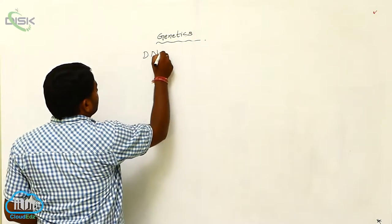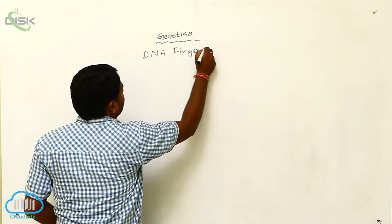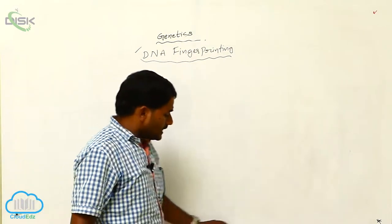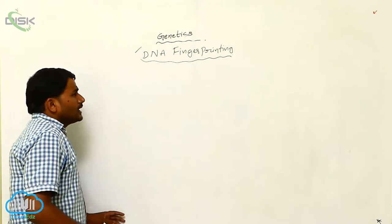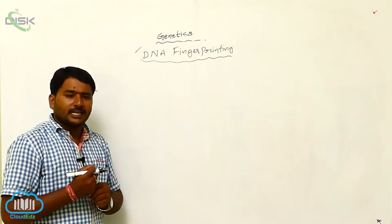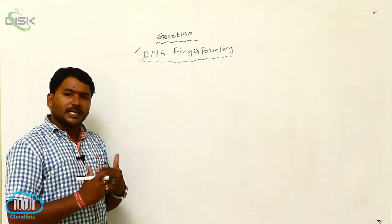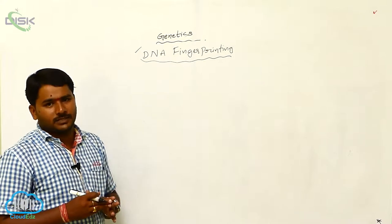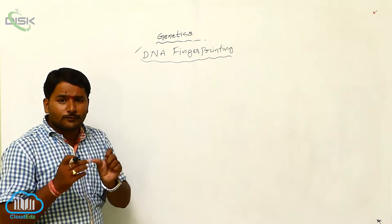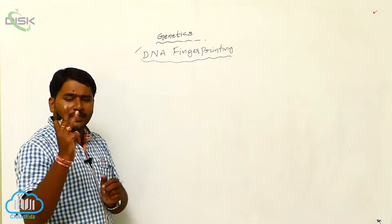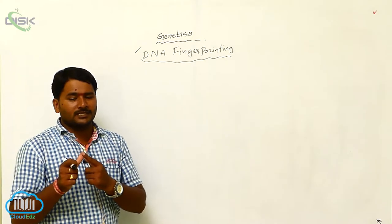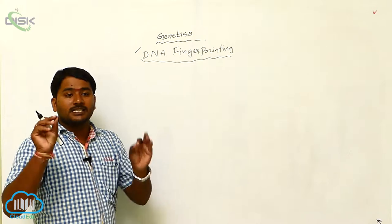Next topic: DNA fingerprinting. It is also known as genetic fingerprinting or DNA typing. These are all the same terms. How are fingerprints unique to an individual? No two individuals have the same fingerprints. In the same way, no two individuals have the same genome.